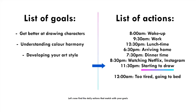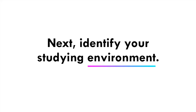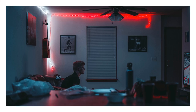The purpose of this exercise is to compare your list of goals — get better at drawing characters, understand color harmony, develop your art style — against your list of actions, which shows you've only put about half an hour toward all three. So there's definitely something we can do here. It's also important to identify your studying environment, because the environment evokes what we do.